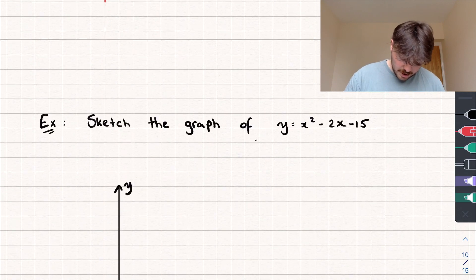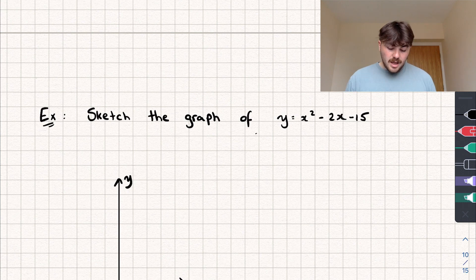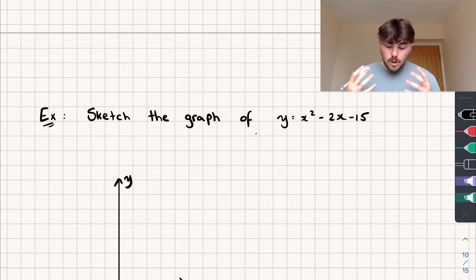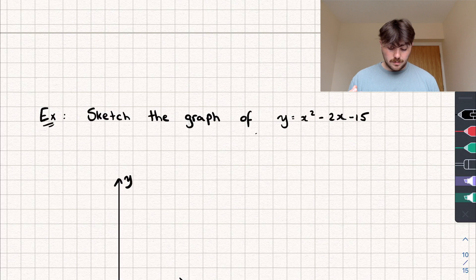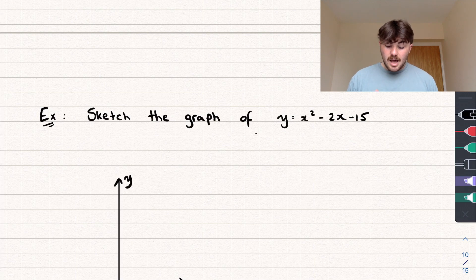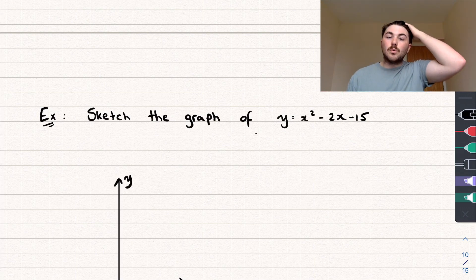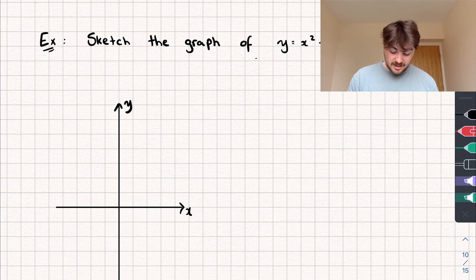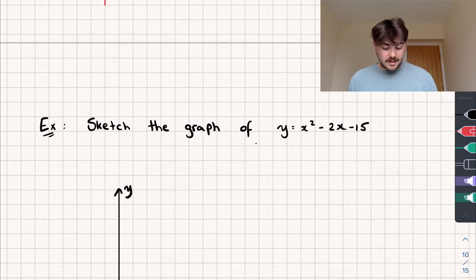Let's take a look at a question. We have to sketch the graph of y equals x squared minus 2x minus 15. The first useful piece of information is where the graph is going to intersect with the y-axis, and that's really easy to find — it happens when our x-coordinate is equal to zero.